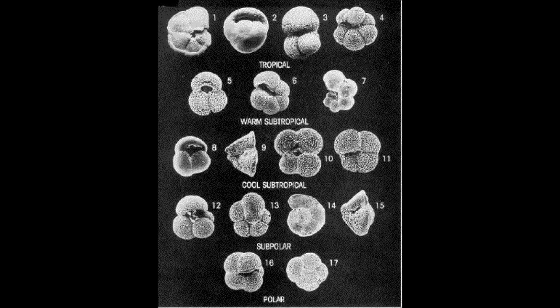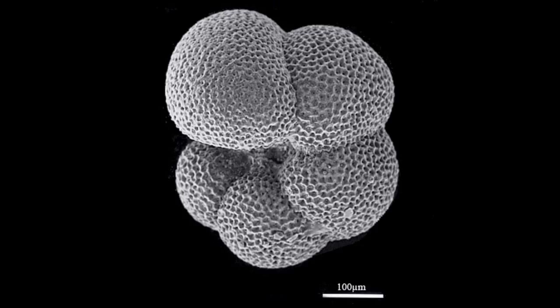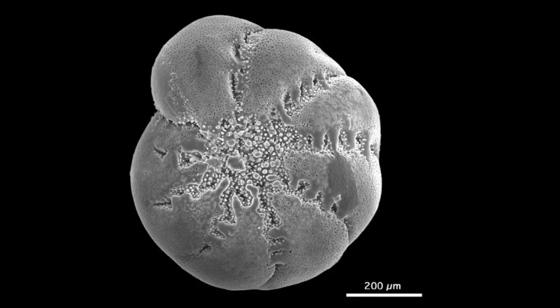Forams make their shells out of oxygen ions. Looking at the ocean floor layers, scientists can see the O16 and O18 ratio in the foram shells. This ratio can be observed by surface and deep ocean forams. Planktonic foram shells are formed in the upper 100 meters of seawater and are proxies for surface water temperatures. Benthic forams are formed in the deep sea waters and are proxies for deep ocean temperatures.